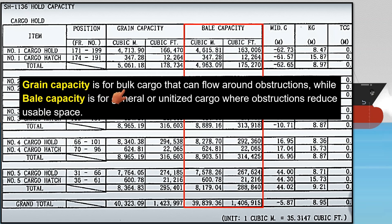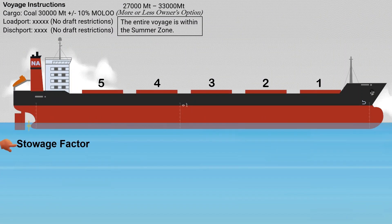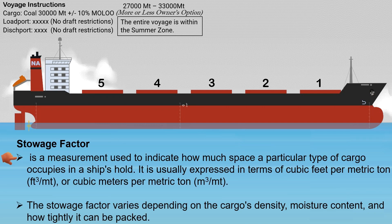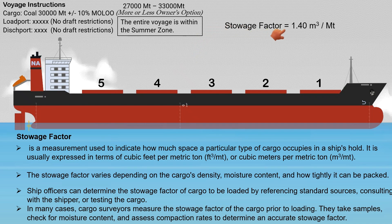In our scenario, the cargo is coal in bulk, so we will be using the grain capacity. Next, we need the stowage factor of the cargo to be loaded. Stowage factor is a measurement used to indicate how much space a particular type of cargo occupies in a ship's hold. It is usually expressed in cubic feet per metric ton or cubic meters per metric ton, and varies depending on the cargo's density, moisture content, and how tightly it can be packed. Cargo surveyors measure the stowage factor prior to loading by taking samples, checking moisture content, and assessing compaction rates. Let's assume the given stowage factor for coal is 1.40 cubic meters per metric ton.